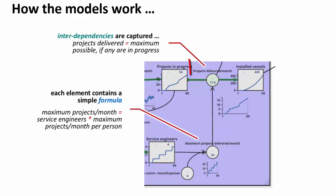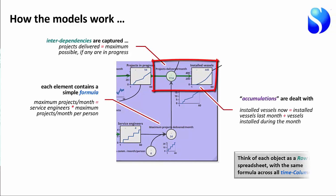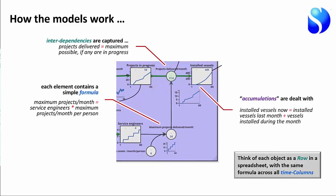This is accumulations. The installed vessels now is the installed vessels last month plus the number of vessels installed during the month. Last month plus what's been added equals this month. So you can think of every object in this diagram as being a single row in a spreadsheet. We have the 60 months going across the top and the same formula in every cell going across the 60 months.